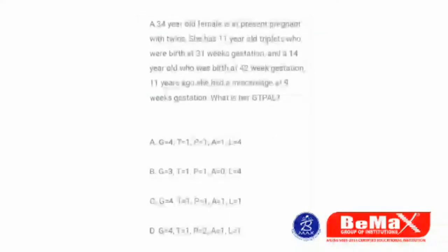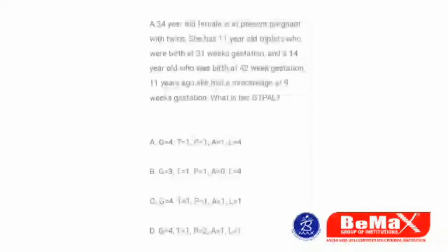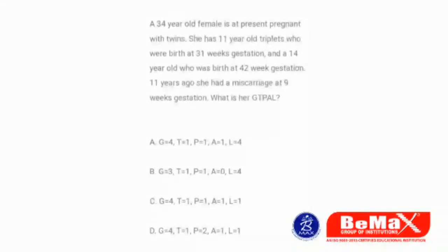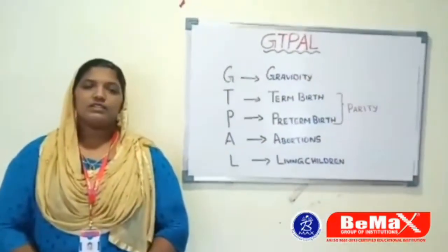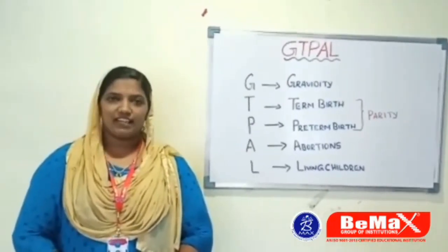For L, the total number of living children: she has triplets, that is 3, plus the 14-year-old, making 4. So L is 4. The correct answer is Option A: G4, T1, P1, A1, L4. Hope you understood the class. Thank you.